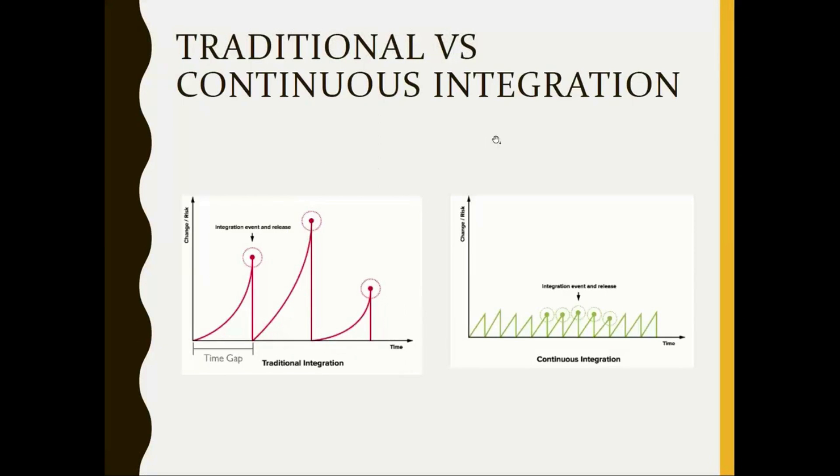But before that, let's analyze the differences between traditional and continuous integration. In traditional integration, integration would happen once in a while. They would pull all the code manually and merge it into the system. And the time gap between the integration events was huge.